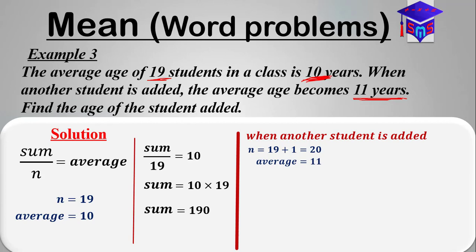And also you'd agree with me that if the sum of the ages of 19 students is 190 and another student is added, the sum of their ages would increase by a certain number which we don't know. So we'll let it be x, and so the new sum becomes 190 plus x.